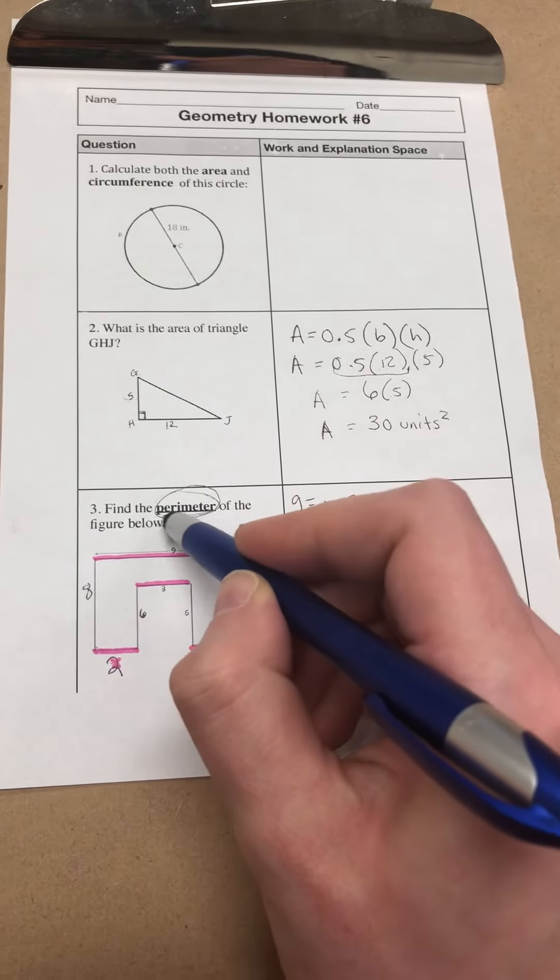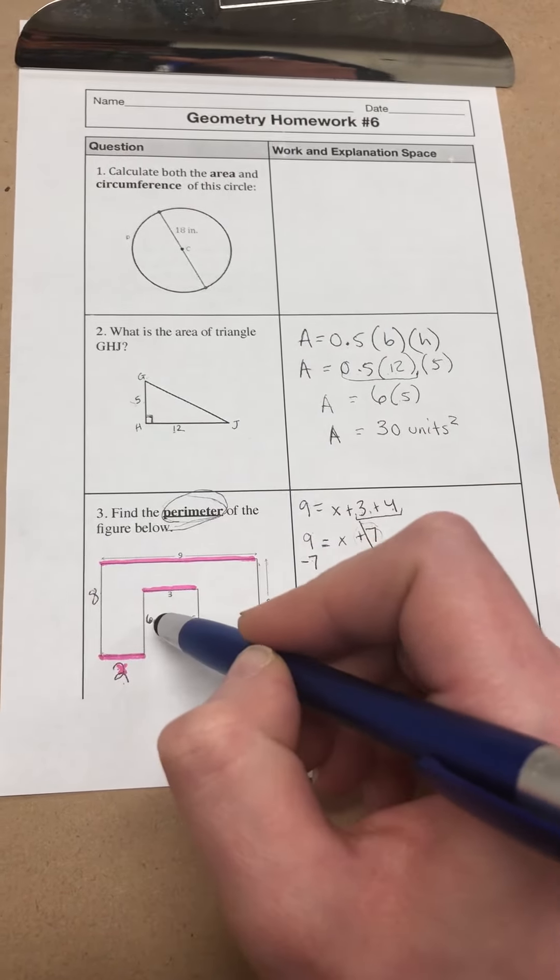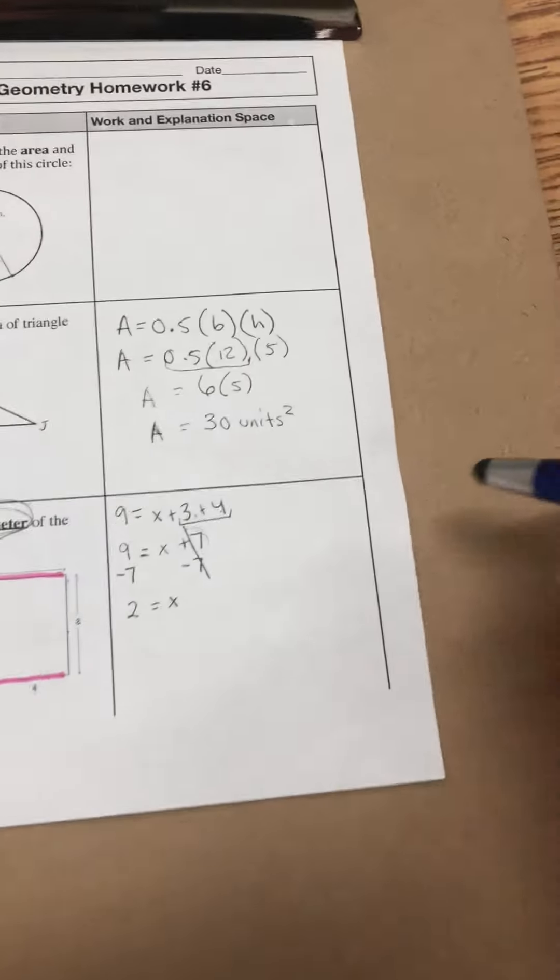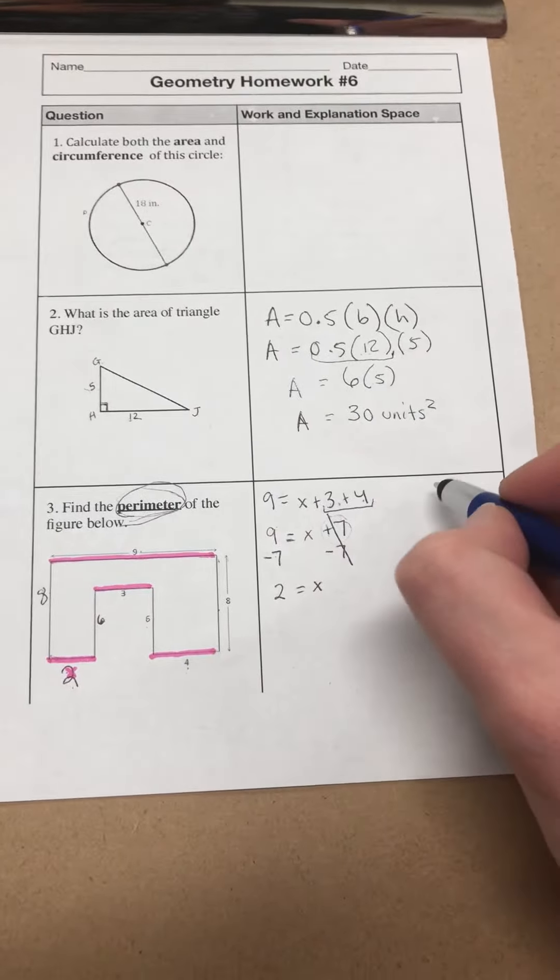So now for the perimeter, I need to add 8 plus 2 plus 6 plus 3 plus 6 plus 4 plus 8 plus 9. I'll write those numbers down, but then it's going to be up to you to add those.